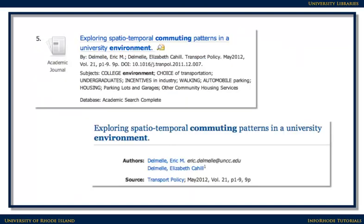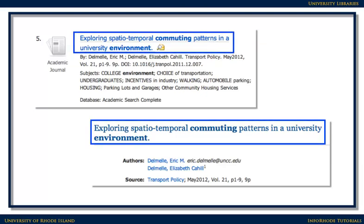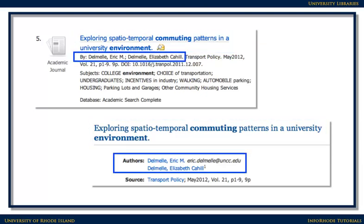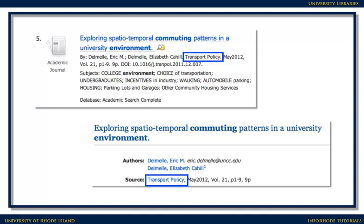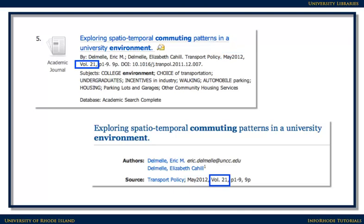Here are two examples of information you'll find about articles. If you're citing an article, you'll need similar elements: the title of the article, the authors, the name of the journal, magazine, or newspaper the article came from, the date the article was published, the volume and issue, and the pages if they're available. Sometimes you'll also need the date that you accessed the item.